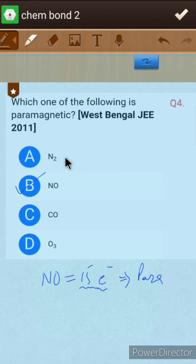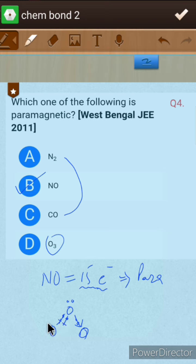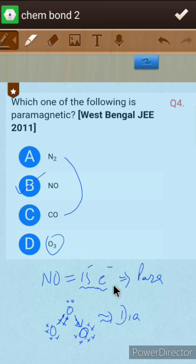N2 and CO are isoelectronic with 14 electrons and will have no unpaired electrons. In the case of ozone, the structure shows that all valence electrons on each oxygen atom are paired — the lone pairs and bonding electrons are all paired. Therefore ozone is also a diamagnetic molecule.